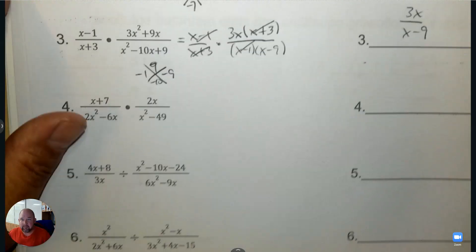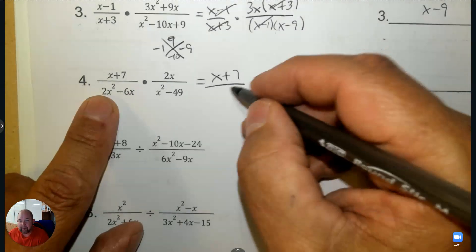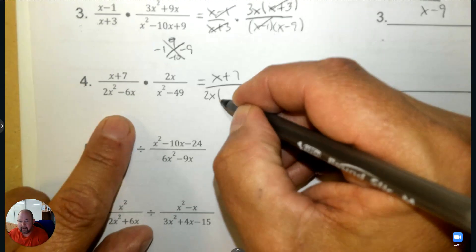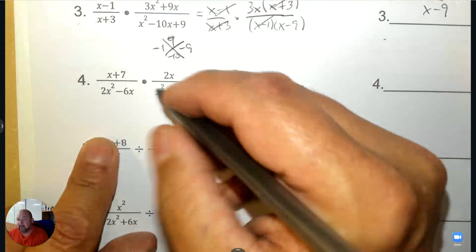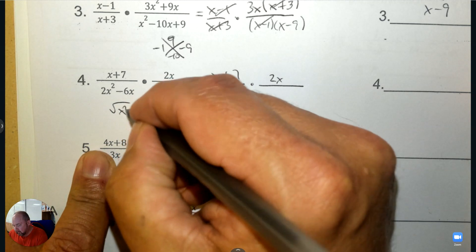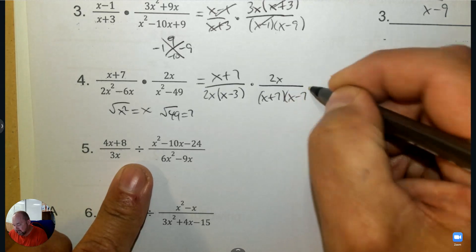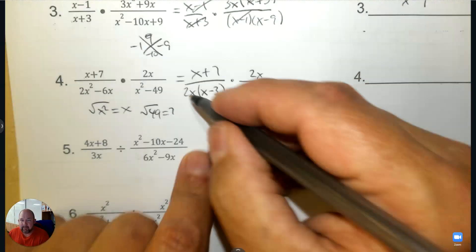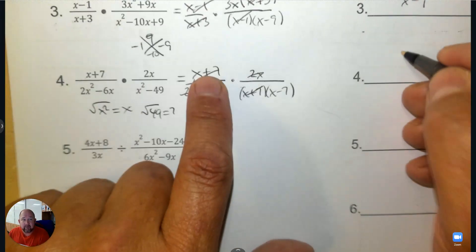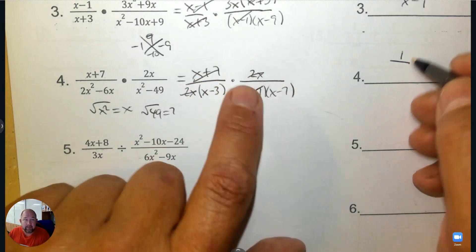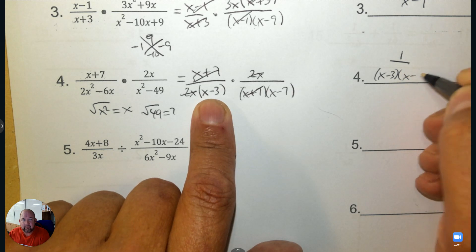Number 4 — can you factor? So x plus 7 is prime. Factor out a 2x, divide, and you're left with x minus 3. The denominator is a difference of squares: the square root of x squared and the square root of 49, so we write x plus 7 and x minus 7. Now we can match — the 2x's cross out, x plus 7 crosses out. When there's nothing left in the numerator, there's still a 1. So in the denominator we have x minus 3 and x minus 7.